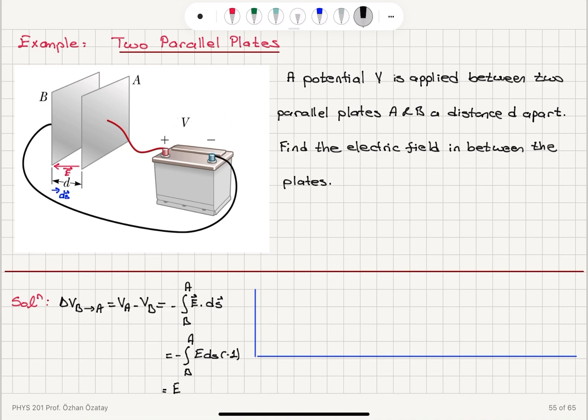So that is integral from B to A, E dot dS minus 1. So we can see that this is E times d. So we integrate over dS, then we obtain d.